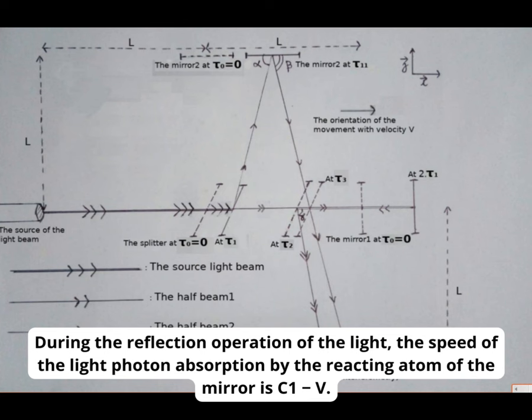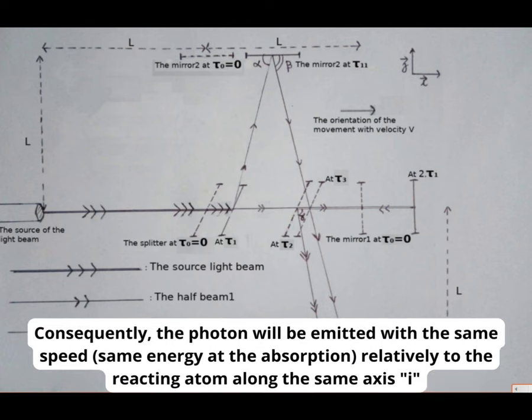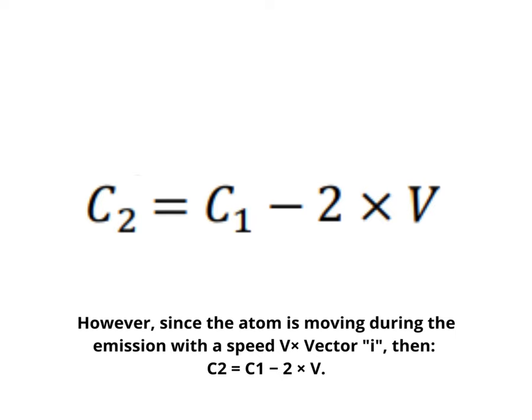During the reflection operation of the light, the speed of the light photon absorption by the reacting atom of the mirror is c1 minus v. Consequently, the photon will be emitted with the same speed, same energy at the absorption, relatively to the reacting atom along the same axis. However, since the atom is moving during the emission with the speed v times vector i, then c2 equals c1 minus 2 times vector v.